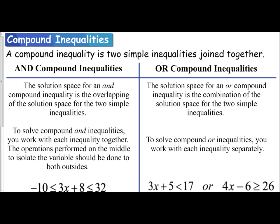Now, a compound inequality is two simple inequalities joined together, and the way that they can be joined together is either by an and compound inequality or an or compound inequality. Each one has its own characteristic and its own solution graph. So let's first examine an and compound inequality.